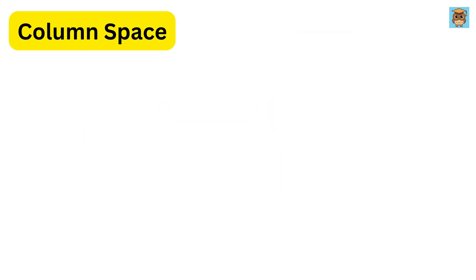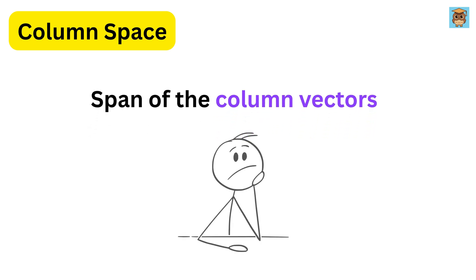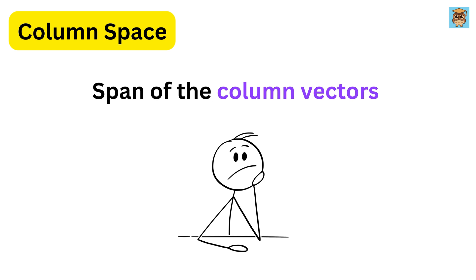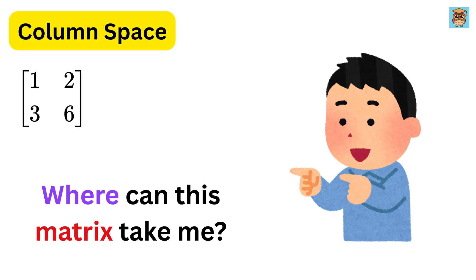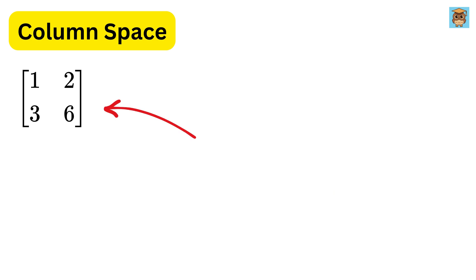Okay, let us start with column space. In most places, column space is simply defined as the span of its column vectors. And that's it, which often leaves us confused, wondering what it even means. So here's the most basic way to think about it. Where can this matrix take me? Okay, consider this matrix A.